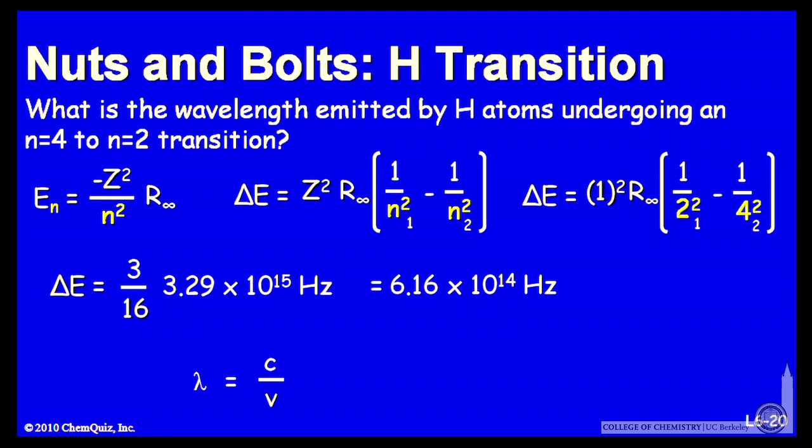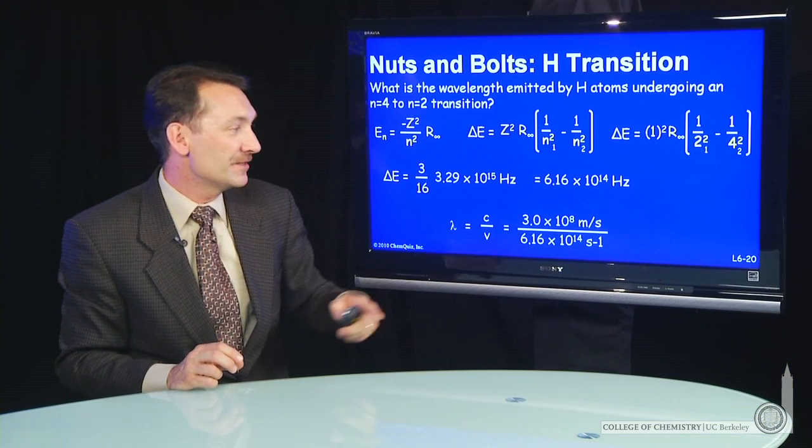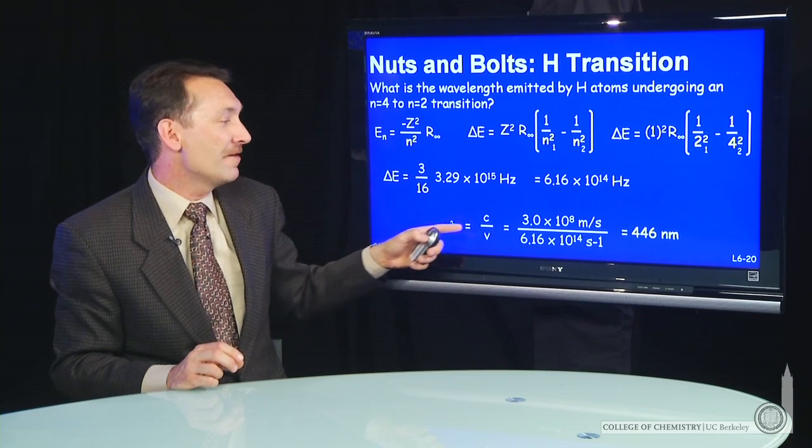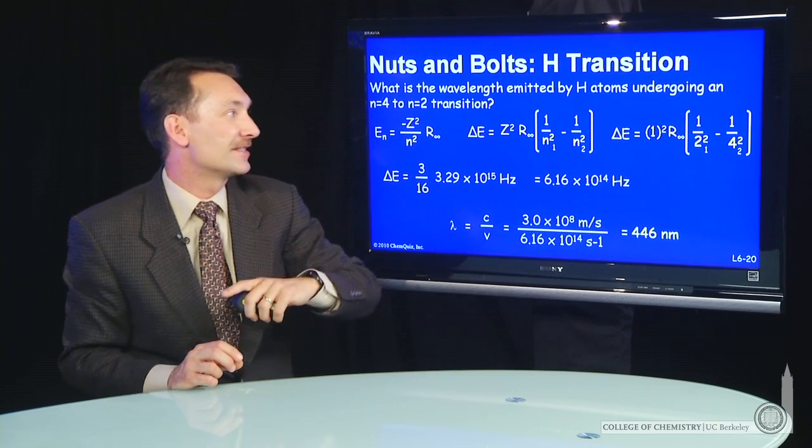The wavelength is given by the speed of light over the frequency. I now have the frequency. So the speed of light, 3 times 10 to the 8th over our frequency, gives me a wavelength of 446 nanometers.